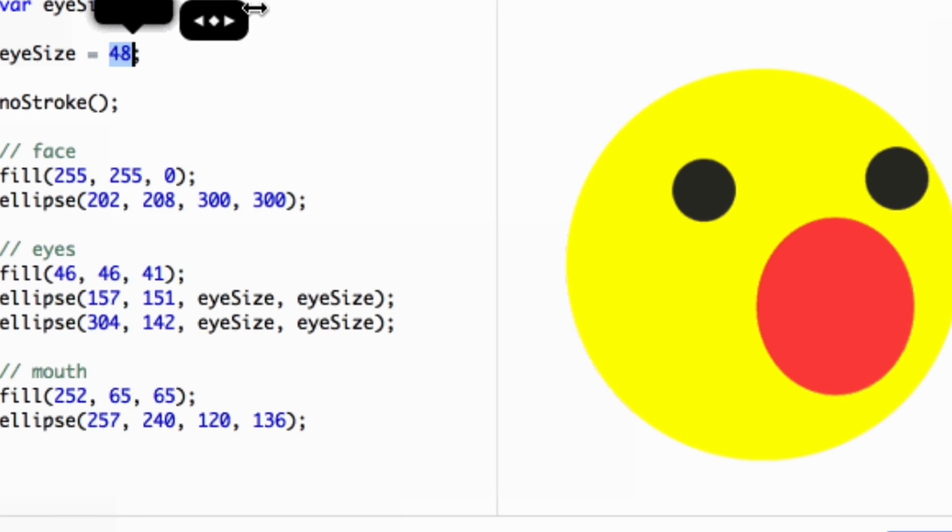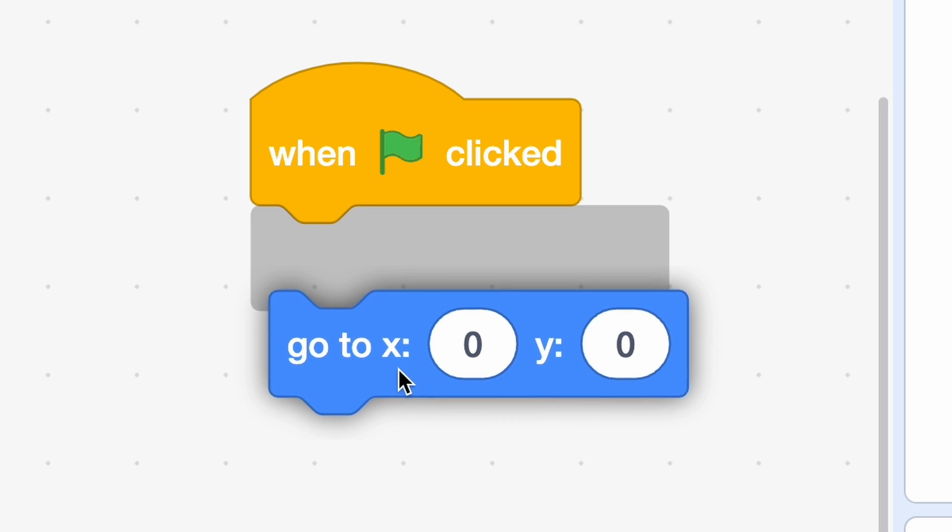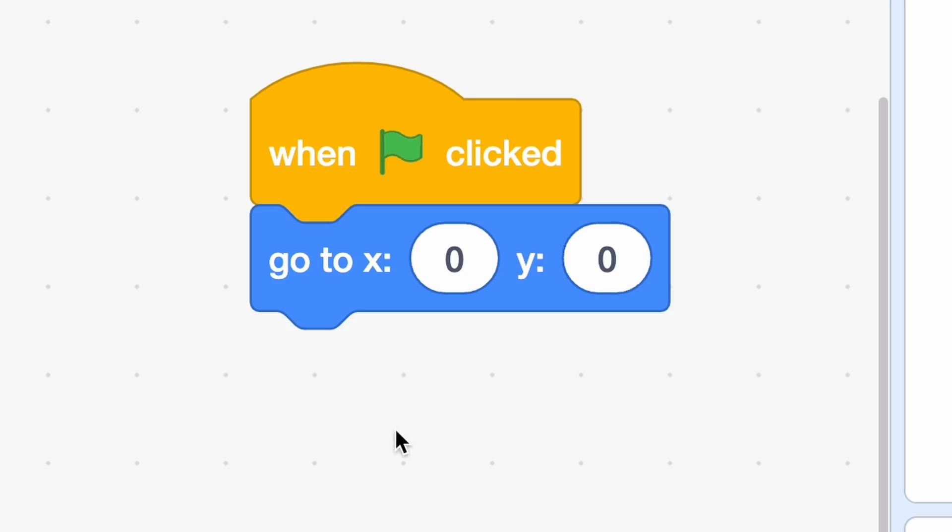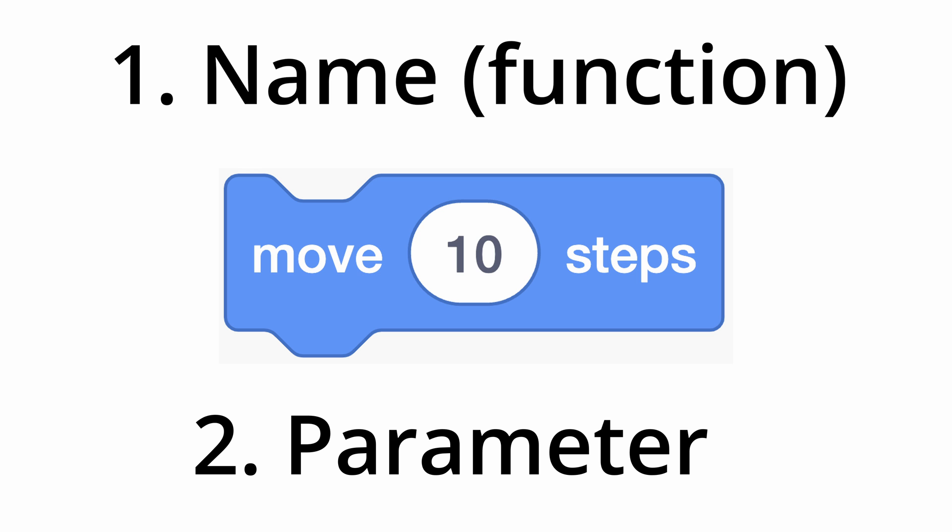In essence, Lecture Zero is not just about Scratch. It's a well-rounded introduction to fundamental programming concepts. Just like how Scratch blocks snap together like puzzle pieces, coding is really just a large, intricate puzzle. Within this puzzle, we have functions and parameters which are represented by block names and white text bubbles.